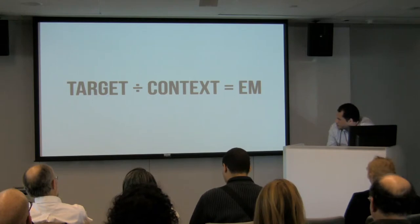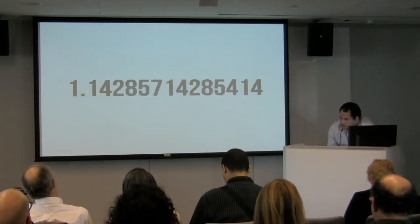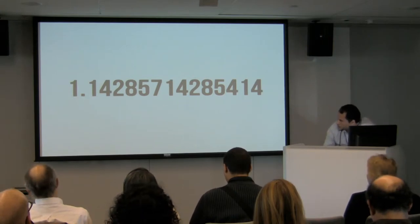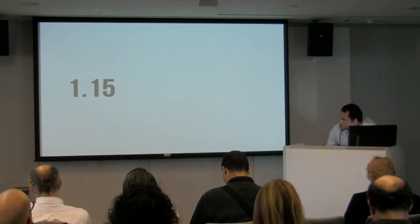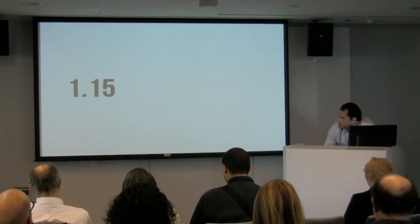Target divided by context equals em. But you can get some messy numbers that way. If you want to be pixel perfect and browsers round differently, you're going to have to put that in your stylesheet, and that just looks messy. But if you're focusing em-first, designing in the browser, you can come up with a beautiful clean number. Super easily maintainable.